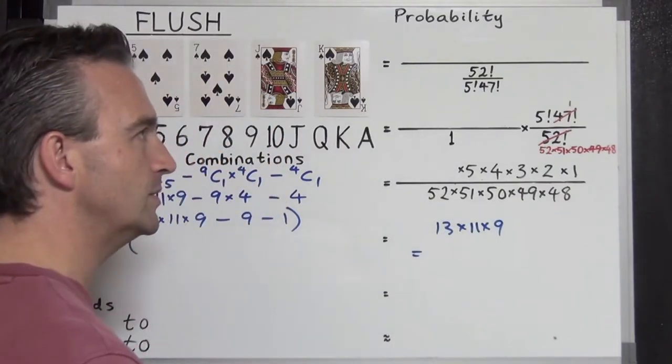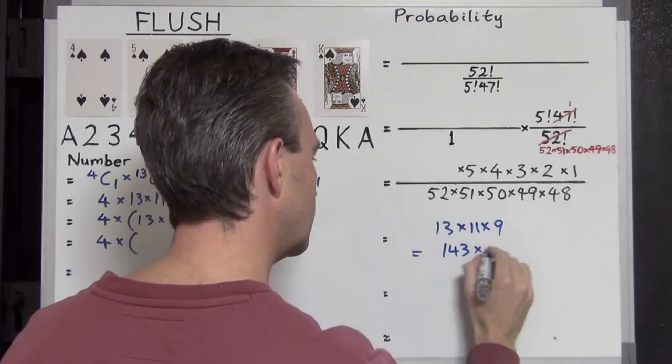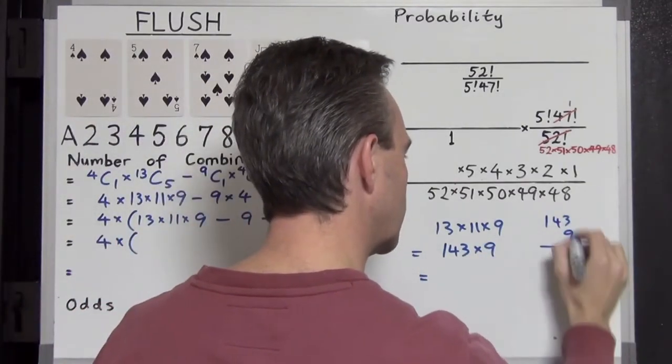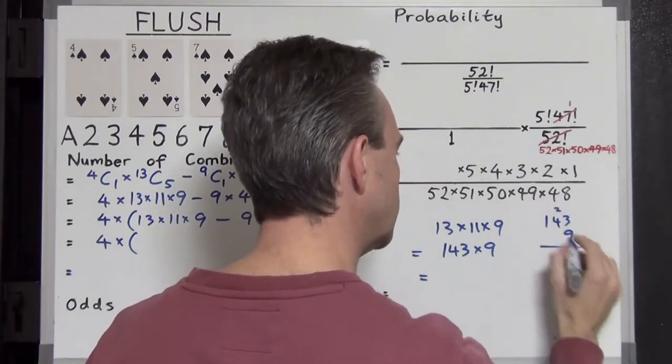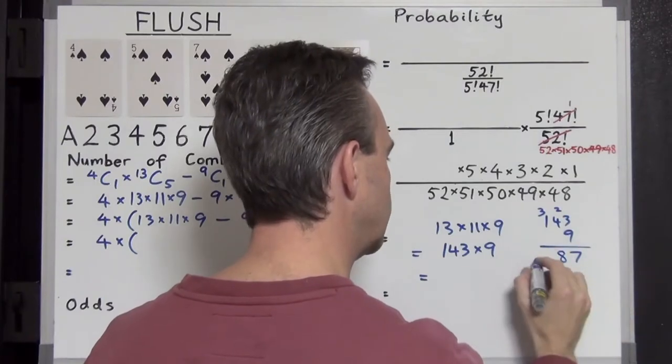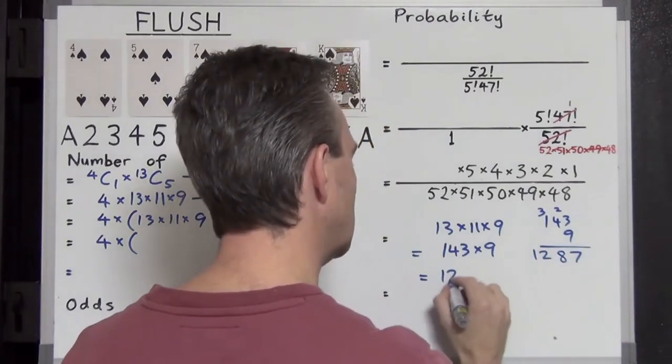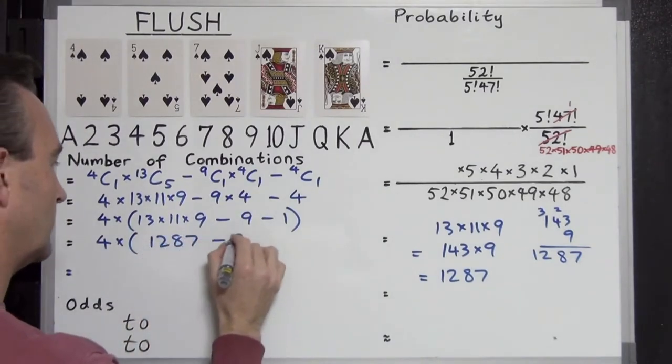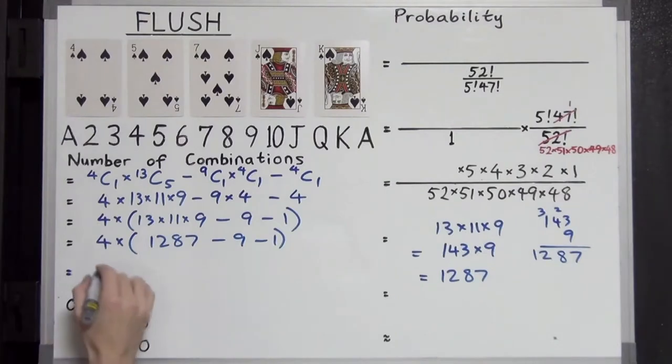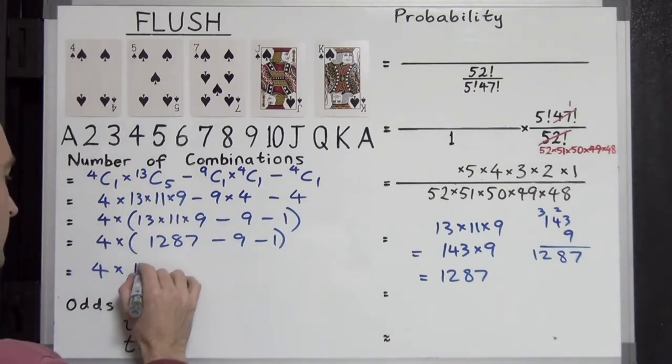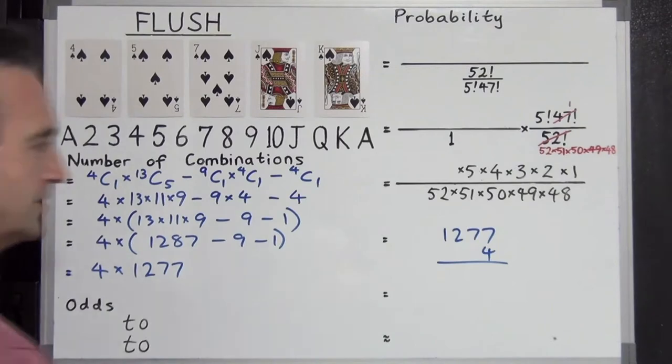13 times 11 I know is 143 times 9. 143 times 9. 3 times 9 plus 3 is 12. 1287. Let's put that here. 1287 minus 9 minus 1. And this all becomes simply 4 times 1277.